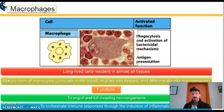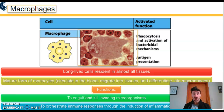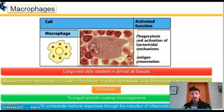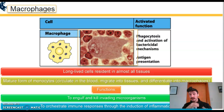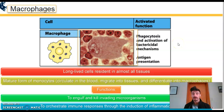When circulating in the blood, the circulating form of a macrophage is called a monocyte. When a monocyte reaches a tissue such as muscle or epithelium, it matures into a macrophage and begins to engulf and kill invading microorganisms. Macrophages orchestrate the immune response by producing cytokines to promote inflammation and chemokines to draw in other innate immune cells.